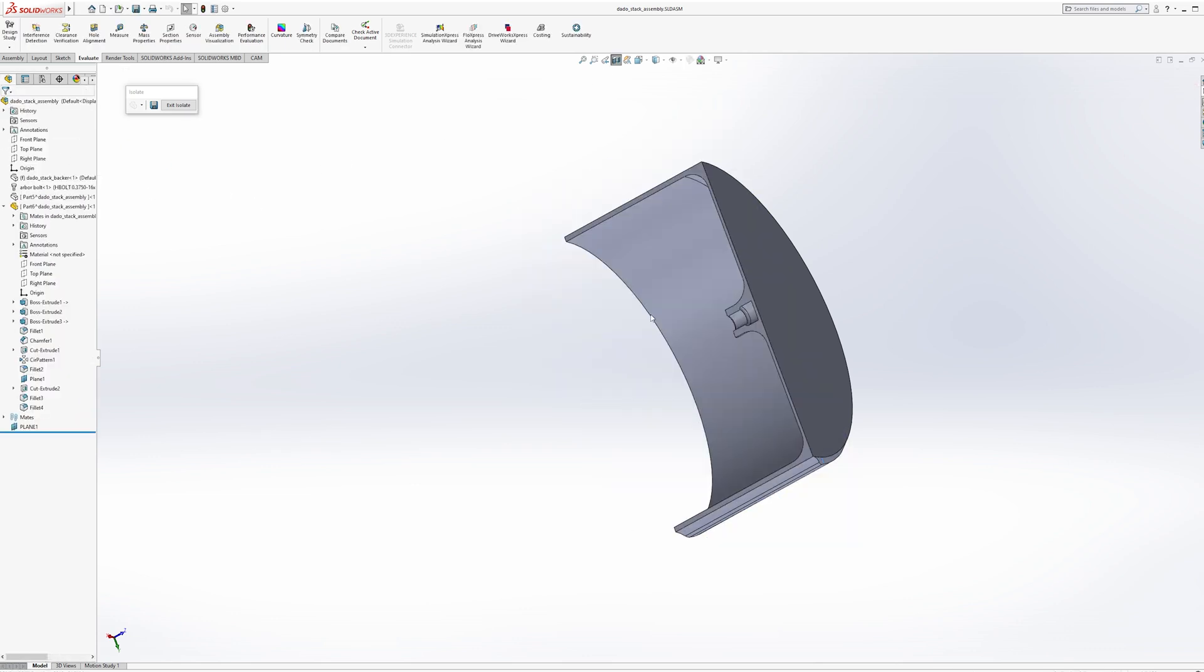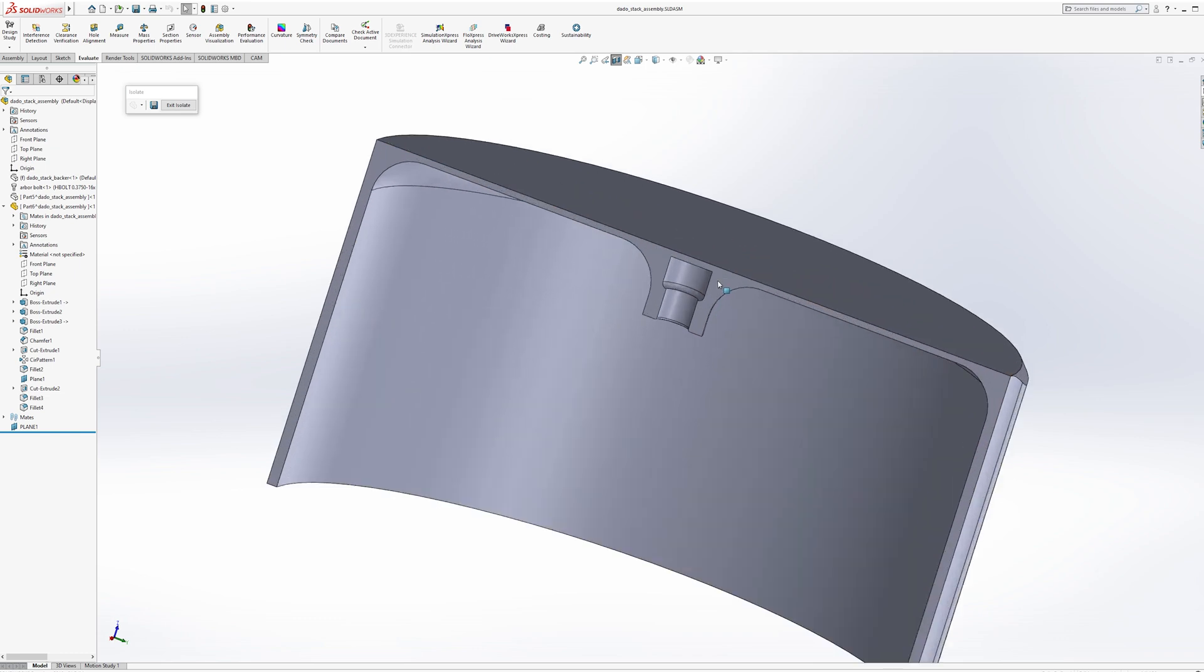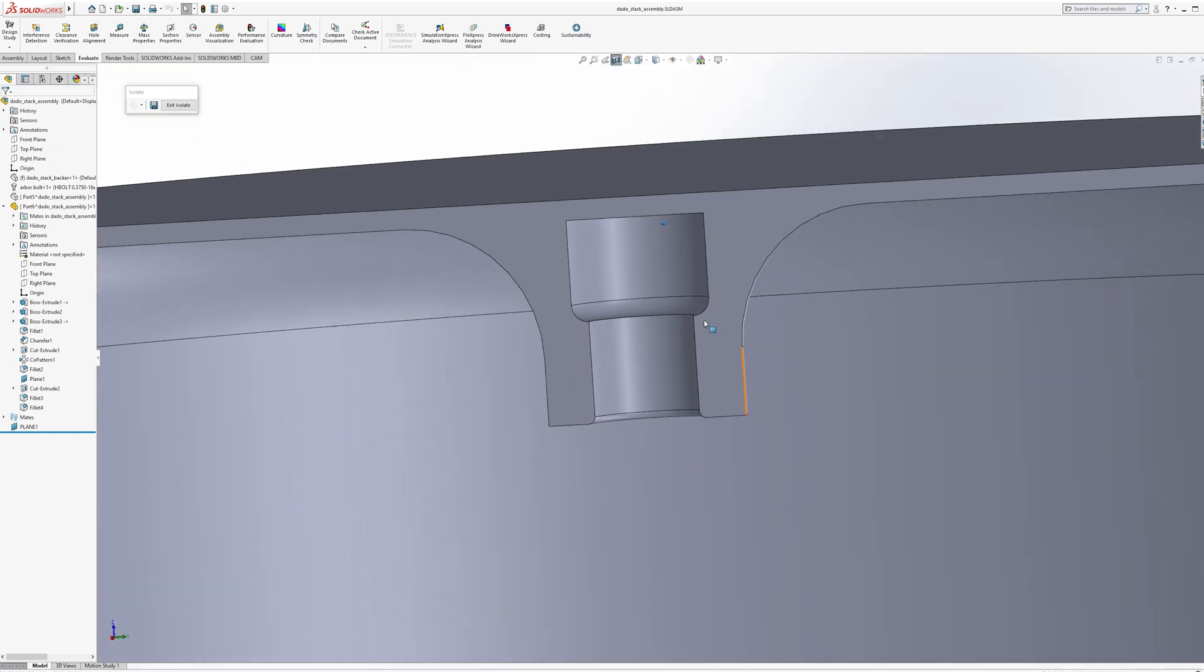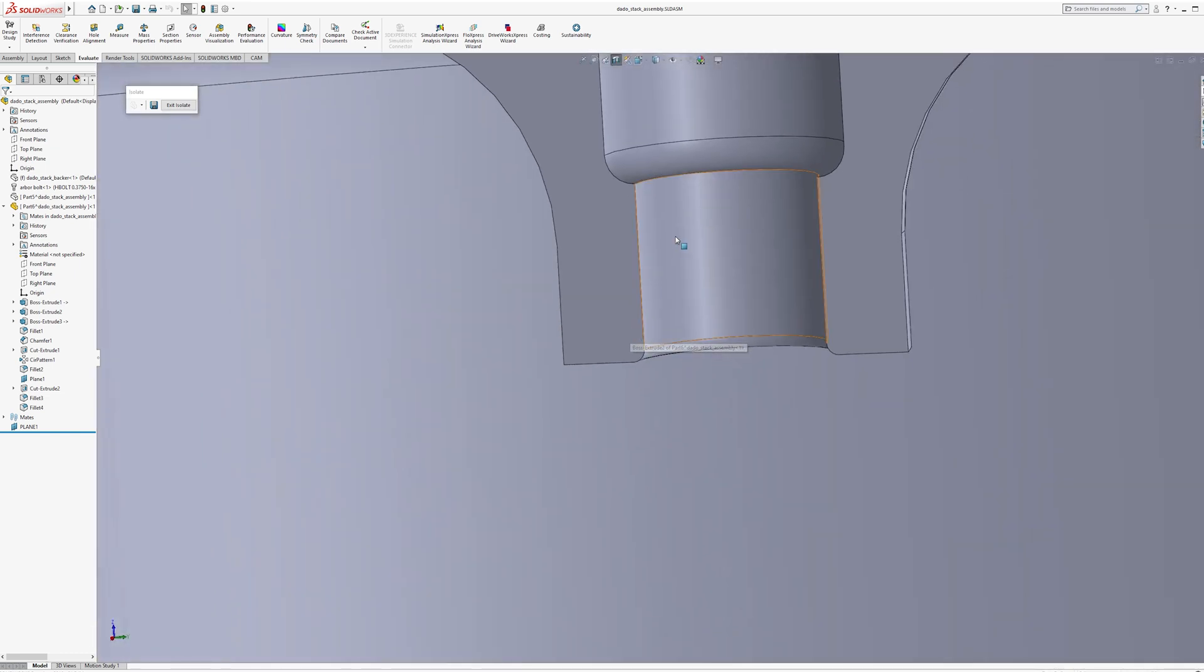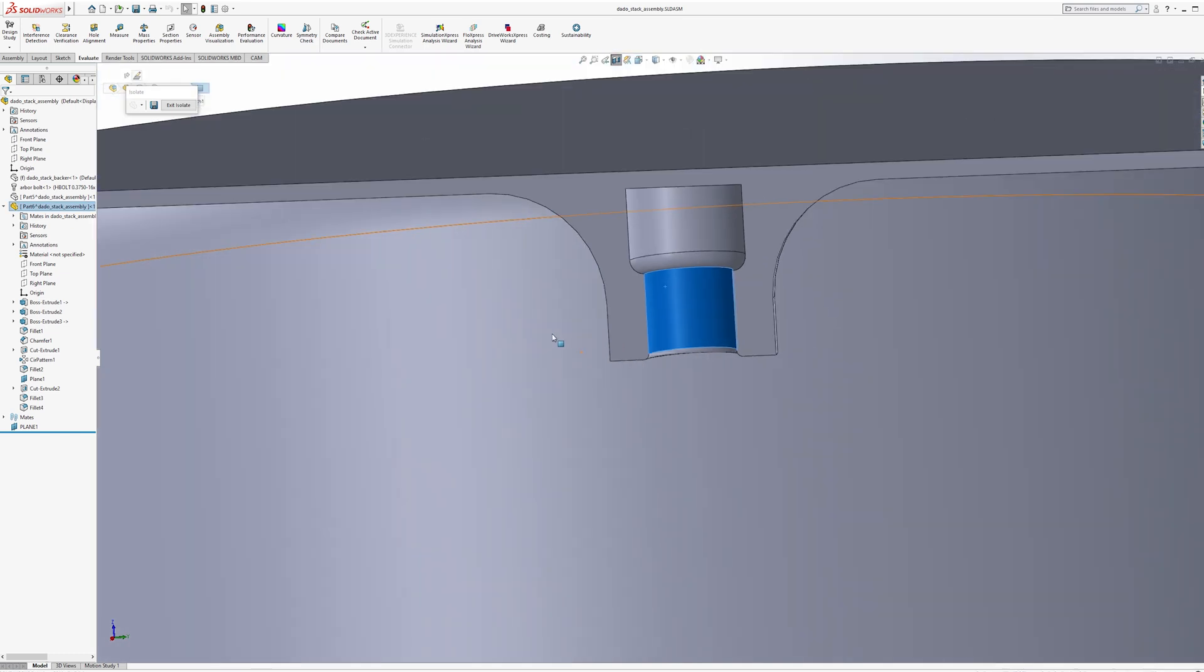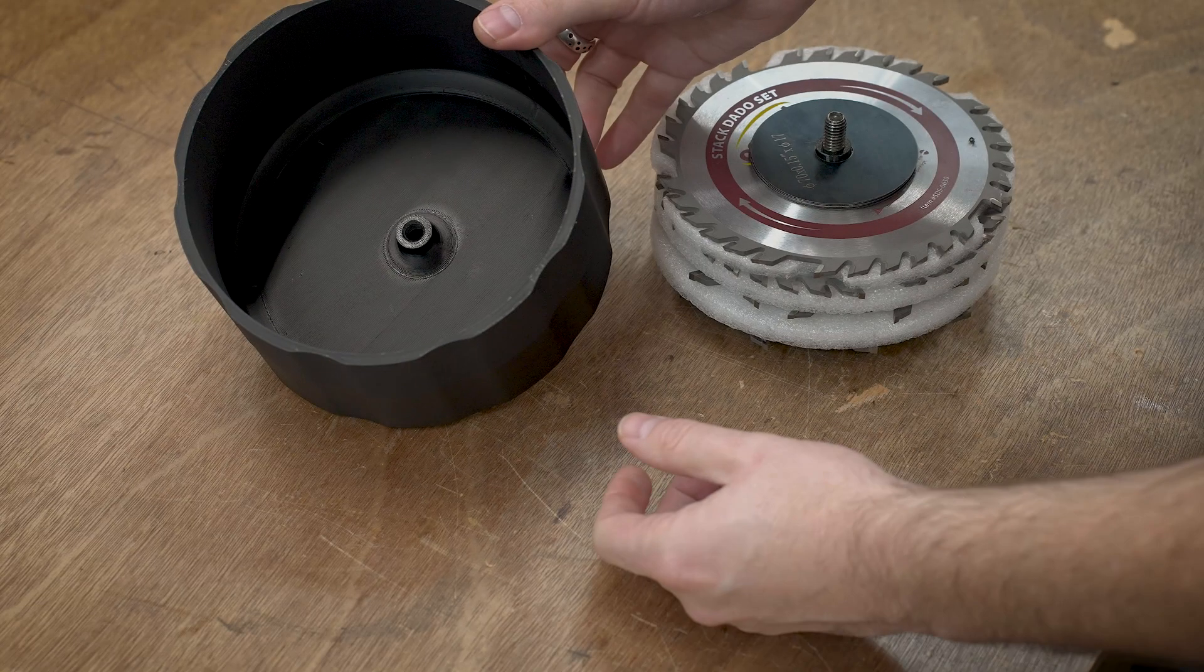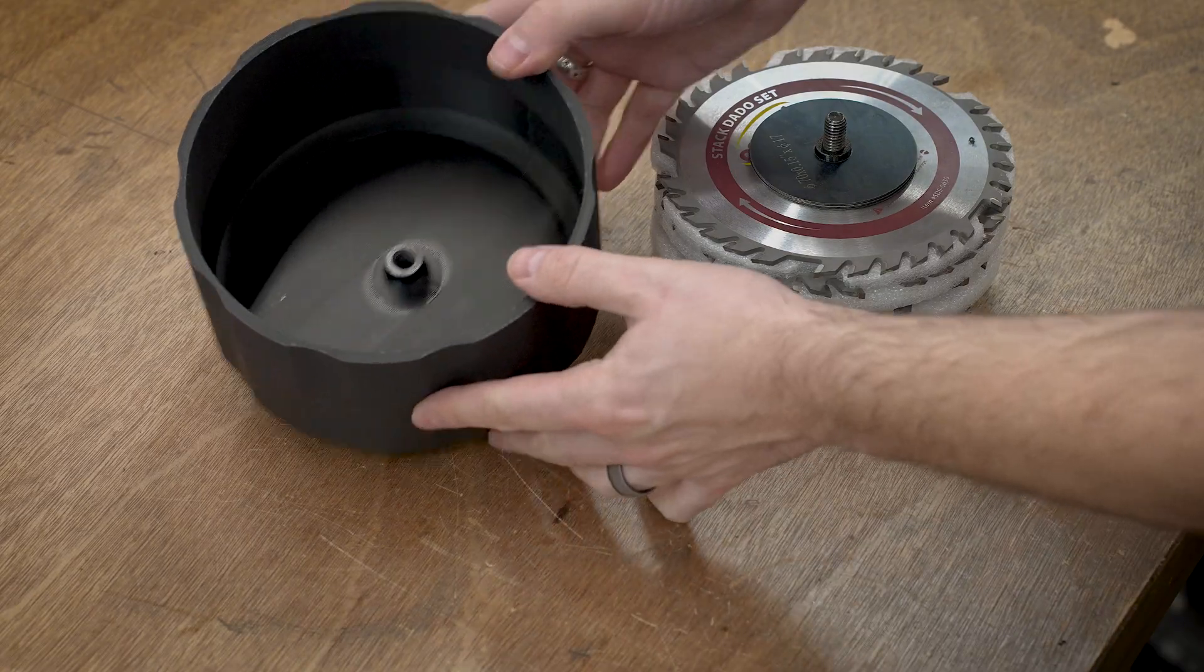If we threaded this all the way straight down we wouldn't be able to get the tap all the way down to the bottom because there's a little bit of a leading edge on there. So I made this little section to only about six millimeters or so of that is threaded. So let's get this tapped and then get this mounted on the board.